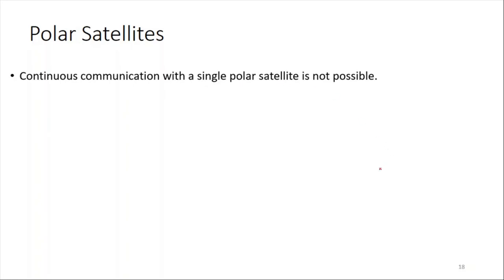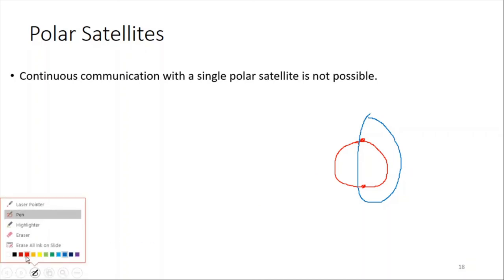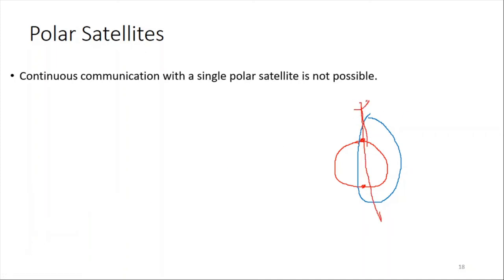Continuous communication with a single polar satellite is not possible. The polar satellite revolves around the earth from pole to pole, not around the equator, while the earth rotates beneath it. Since the period is approximately 1.5 hours, the satellite rotates around the earth every 1.5 hours and the earth moves beneath it, so in every 1.5 hours it can receive signals from the entire surface of the earth.